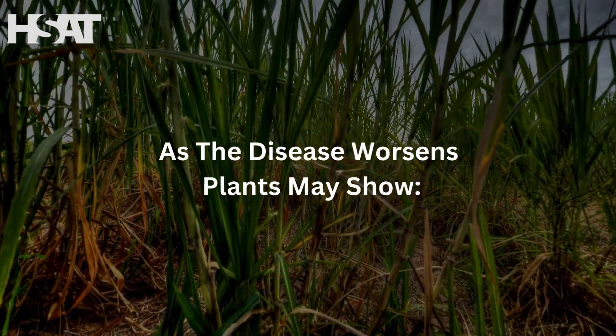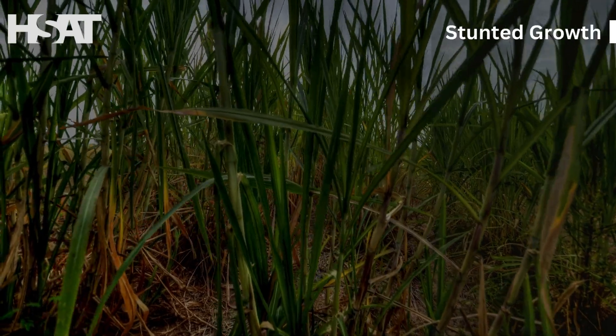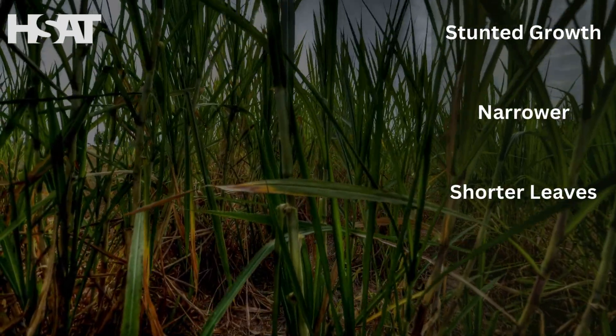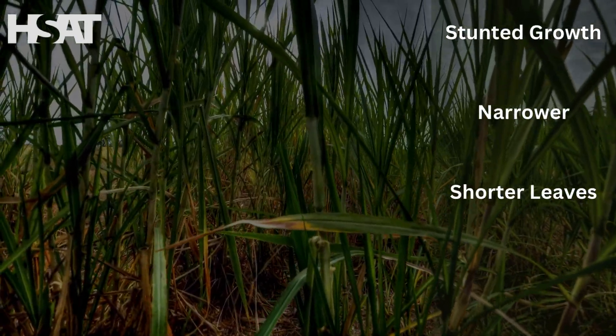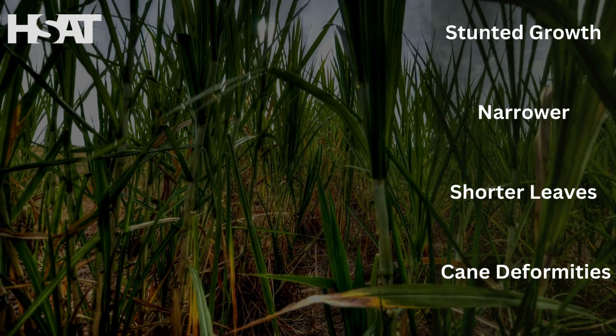As the disease progresses, plants may experience stunted growth with narrower and shorter leaves, and in severe cases, deformities in the entire cane.